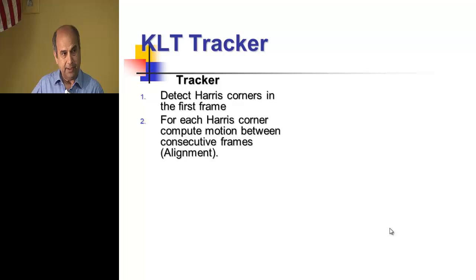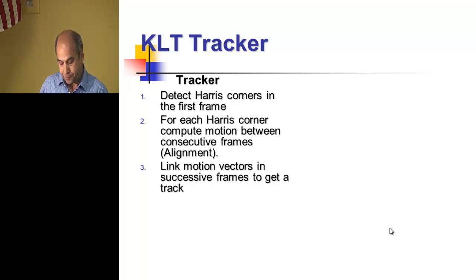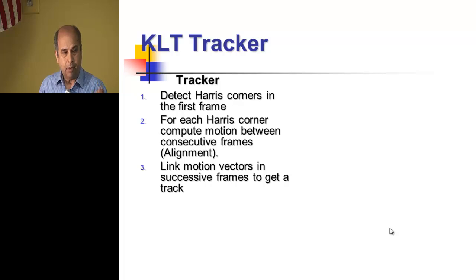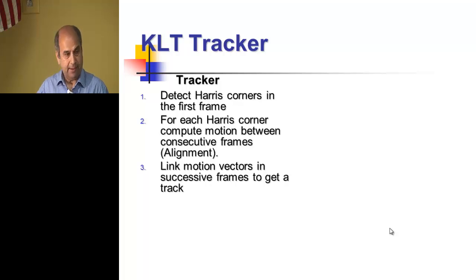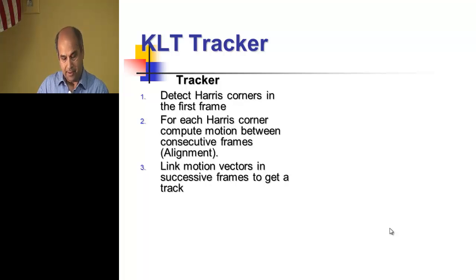The motion is computed using the alignment between two frames — also called registration or global motion. Once we have the alignment and transformation between two frames, we can take a corner point XY in the first frame and find where it went in the next frame. We can then link these positions together.